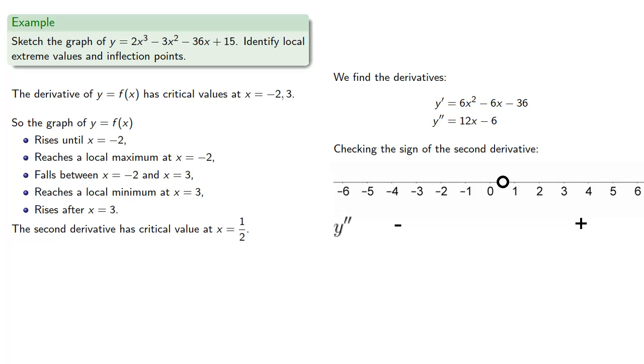And so the graph of y equals f of x will be concave down until x equals 1 half, and then be concave up after x equals 1 half. And because it changes concavity, it will have an inflection point at x equals 1 half.